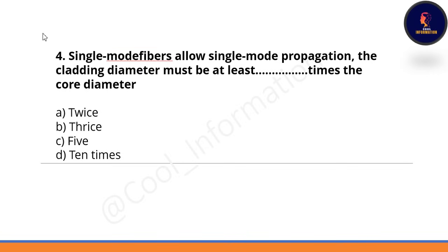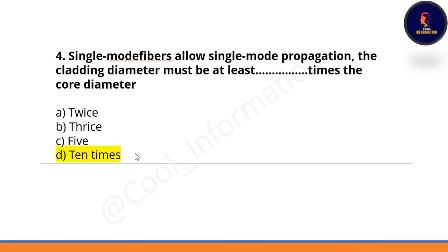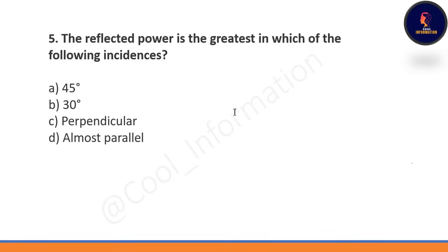Next question: for single mode fiber, the cladding diameter must be at least how many times the core diameter? Options are twice, thrice, five times, or ten times. Correct option is D — the cladding diameter must be at least ten times the core diameter.